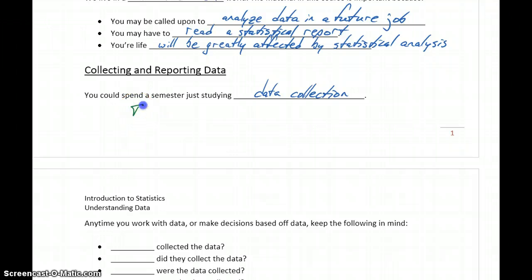So we could spend time talking about the different types of studies. Two key differences here in types of studies that we'll briefly mention will be the difference between an observational study and a controlled experiment.